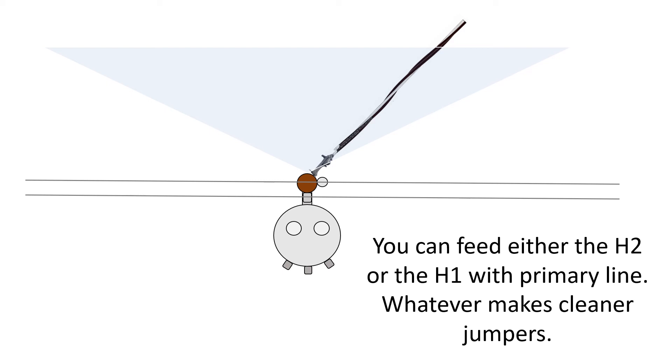Mounting the cutout on the pole, really whatever's convenient for that cutout. You can either feed the H1 or the H2, it does not matter. Whatever you do to one, you have to ground the other one. As I said, it really won't matter.